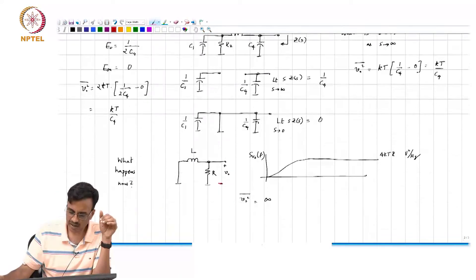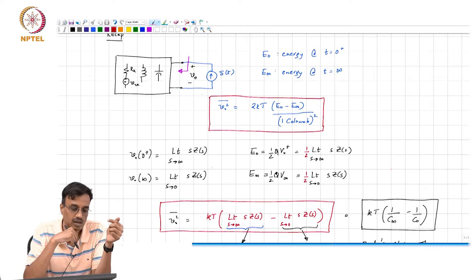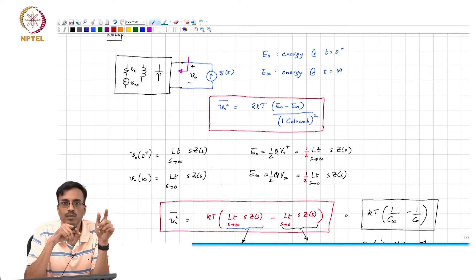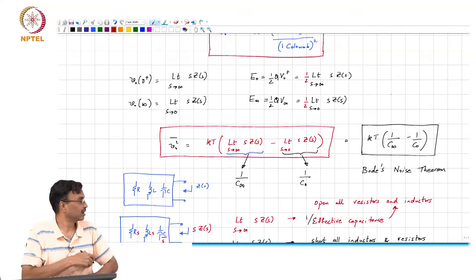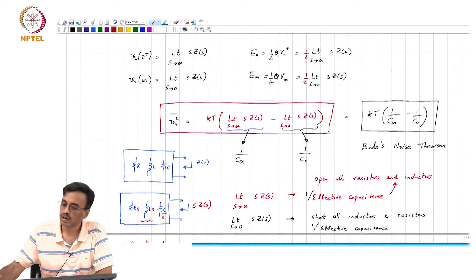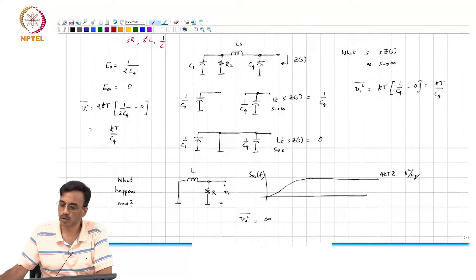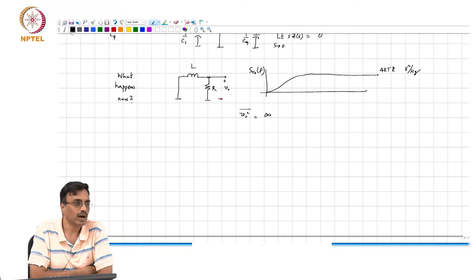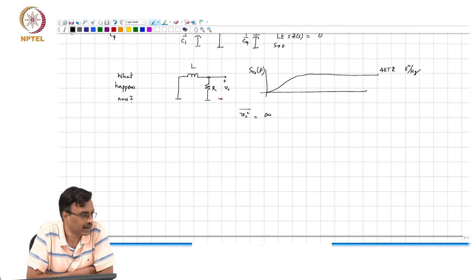Likewise, for networks with R, L, and C where you are interested in the mean square noise current (short-circuit the network), you can write a similar relationship involving L_∞ and L_0. This is called Bode's noise theorem — a nifty trick to look at a complicated network and determine exactly what the total integrated noise will be without going through any algebra or complicated integrals.